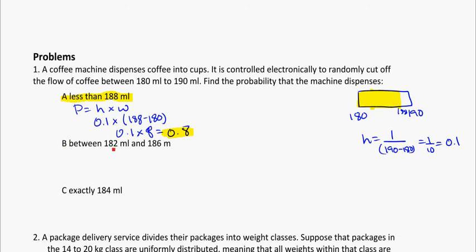And the next question, what's the probability between 182 and 186? So that's 182 and 186. I need to find this area in here. Again, my height is still the same. So I'm going to have 0.1 times the width, which in this case is going to be 4, 186 minus 182. So 0.1 times 4 equals 0.4. That's going to be the probability for those ones, for that area there.